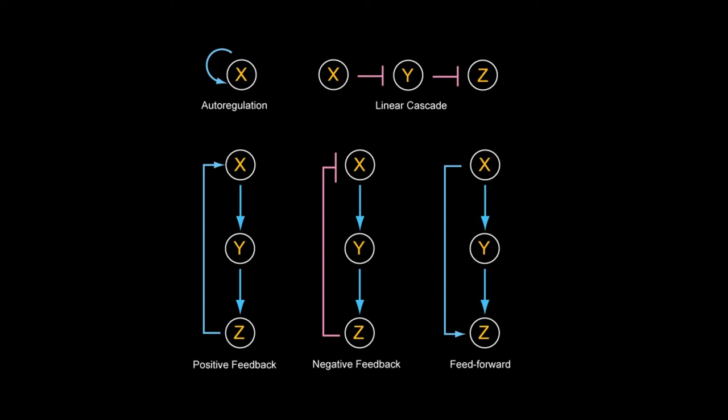Network motifs were first described for gene regulatory networks. Large gene regulatory networks contain a small set of recurring regulation patterns or motifs. Each of these motifs has certain input-output behaviors. Take this motif.